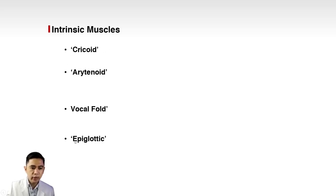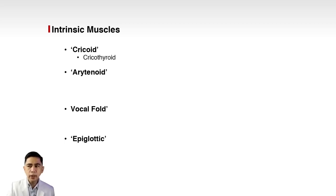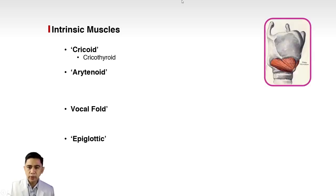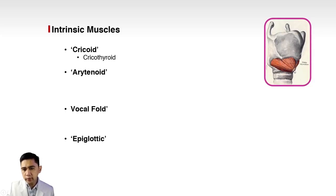The cricoid group has only the cricothyroid muscle. This is the cricothyroid muscle — the muscle that connects the thyroid cartilage and the cricoid cartilage.